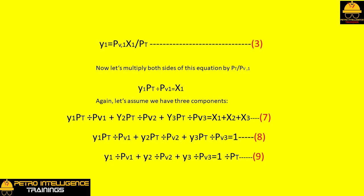Next we divide both sides of the equation by PT, the vessel pressure. y1 divided by PV1 plus y2 divided by PV2 plus y3 divided by PV3 equals 1 divided by PT. This is the dew point equation for a three component system.